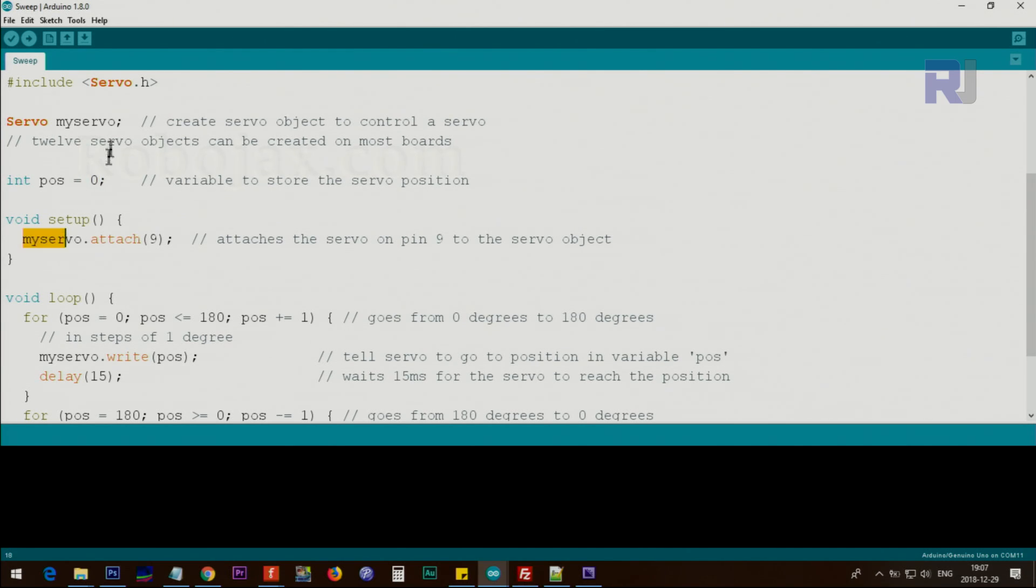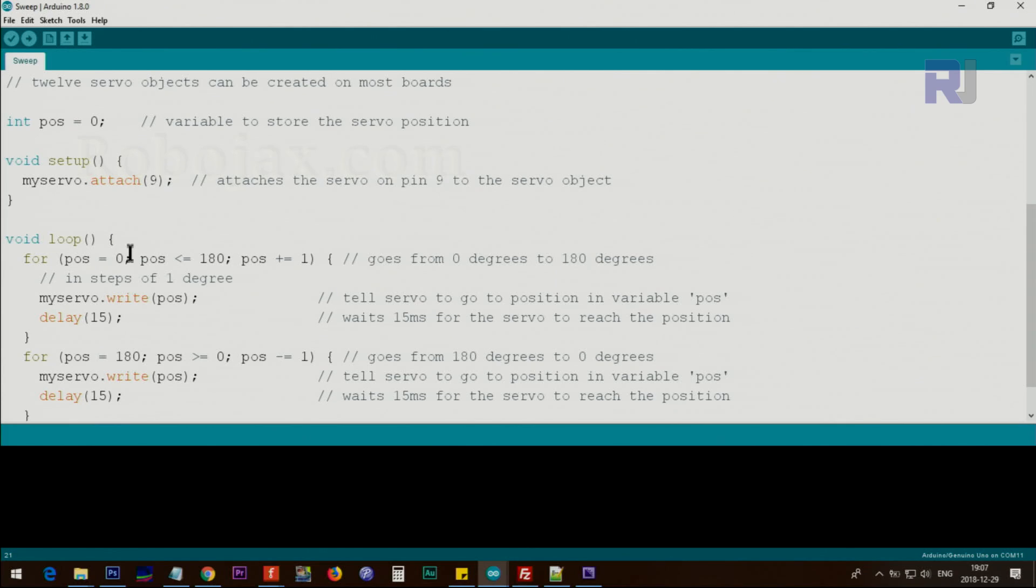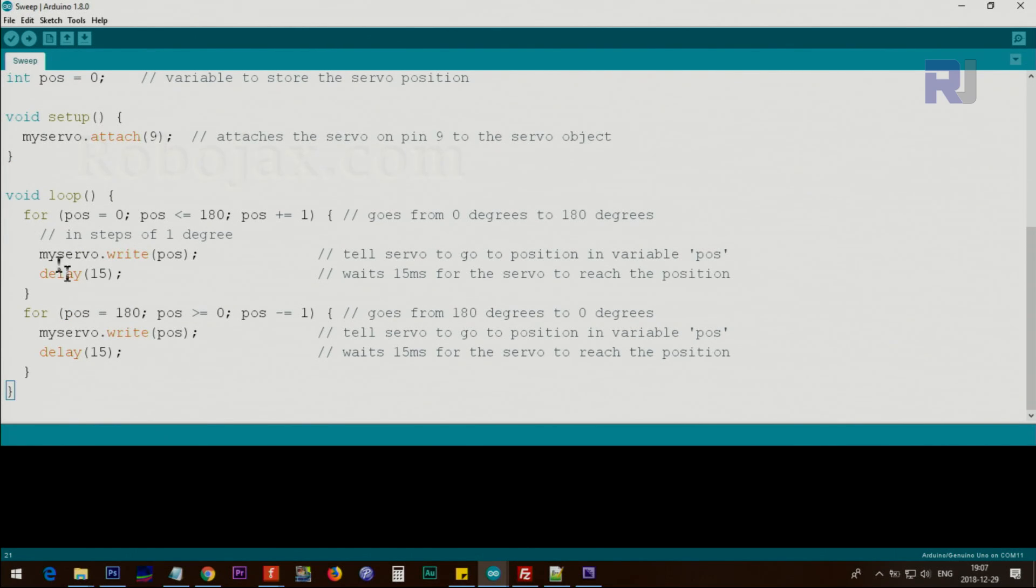Inside the setup we have to attach the servo to the program. Myservo, the same name that you have here, myservo.attach 9. In this case, this example shows that the servo is connected to pin 9. If you have multiple servos, you just put this line in the next one and then change this number to a different pin. Inside the loop here, we have a for loop, one for loop, and then another for loop.